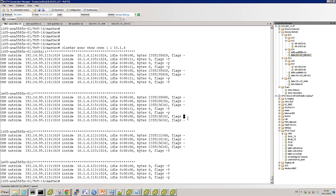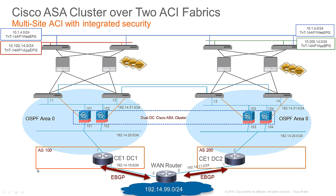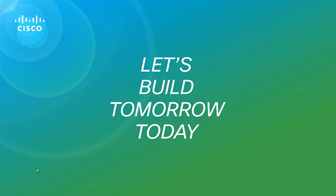Hopefully that demonstrates a validated design where we have an ASA cluster stretched across two sites, with an ACI fabric in each data center interconnected, and the ASA is active-active on both sides through the usage of an ASA cluster. Thanks for watching.